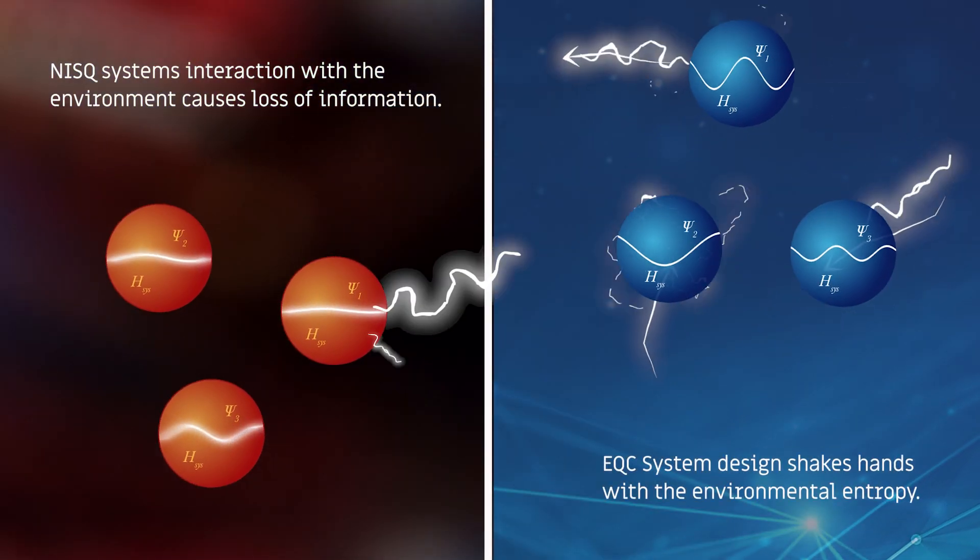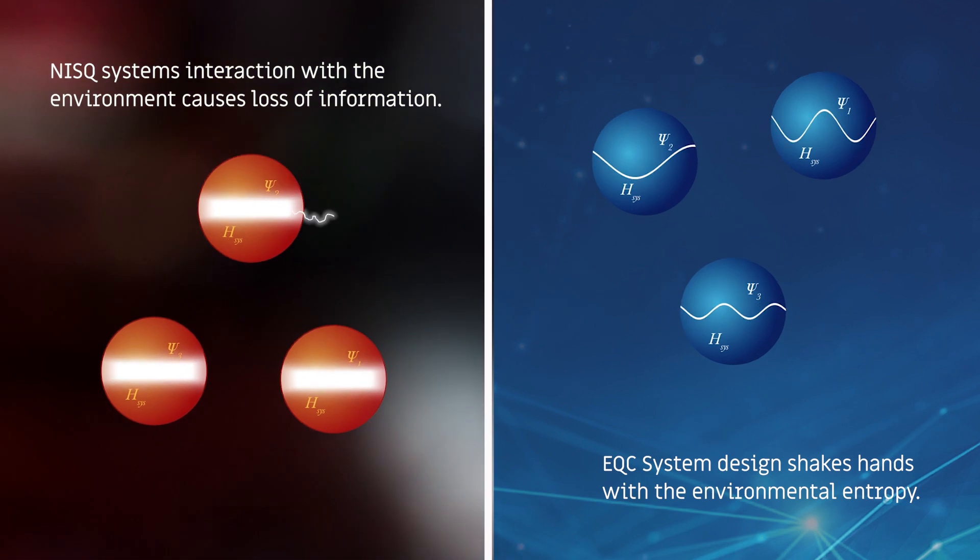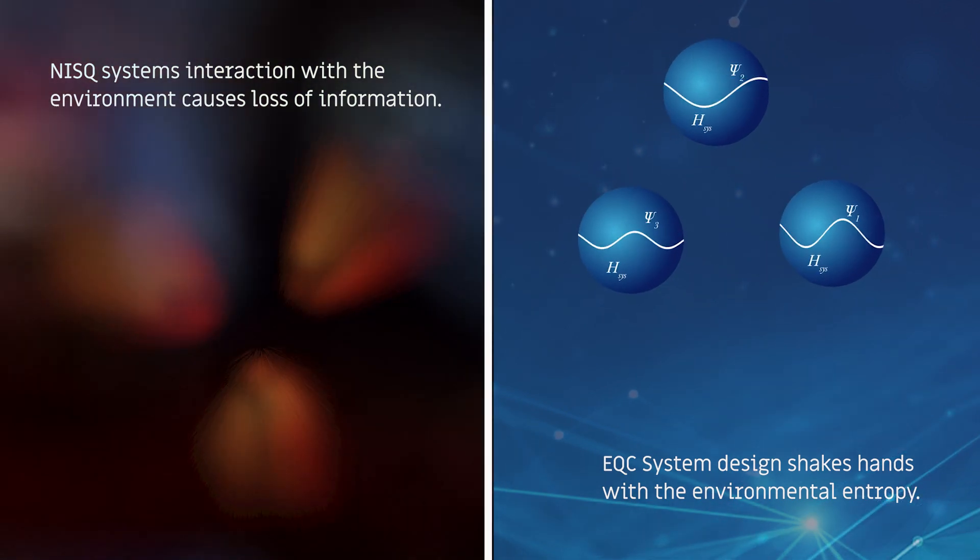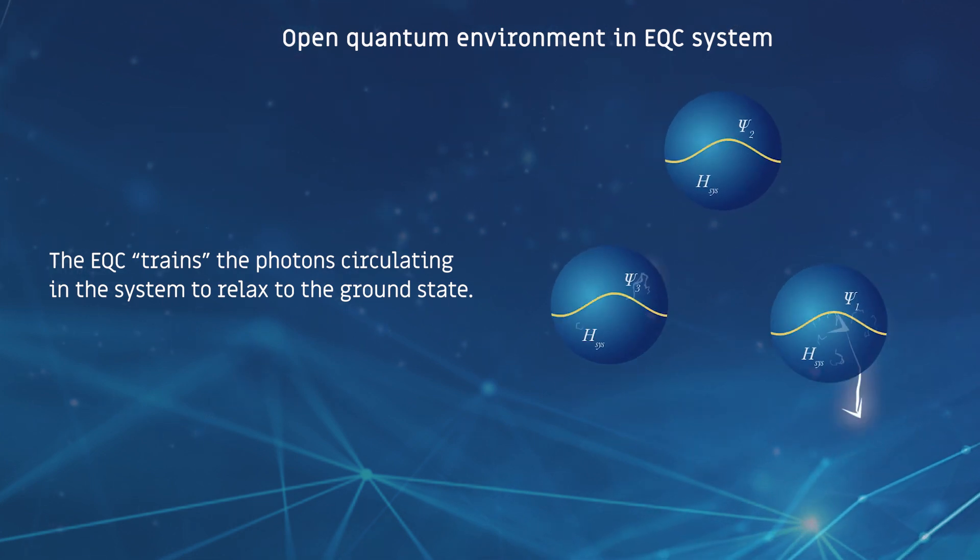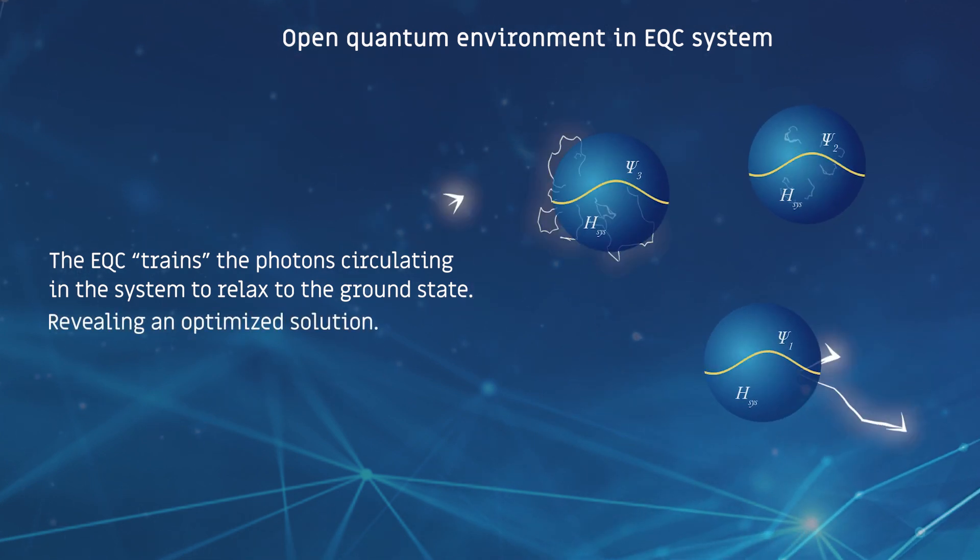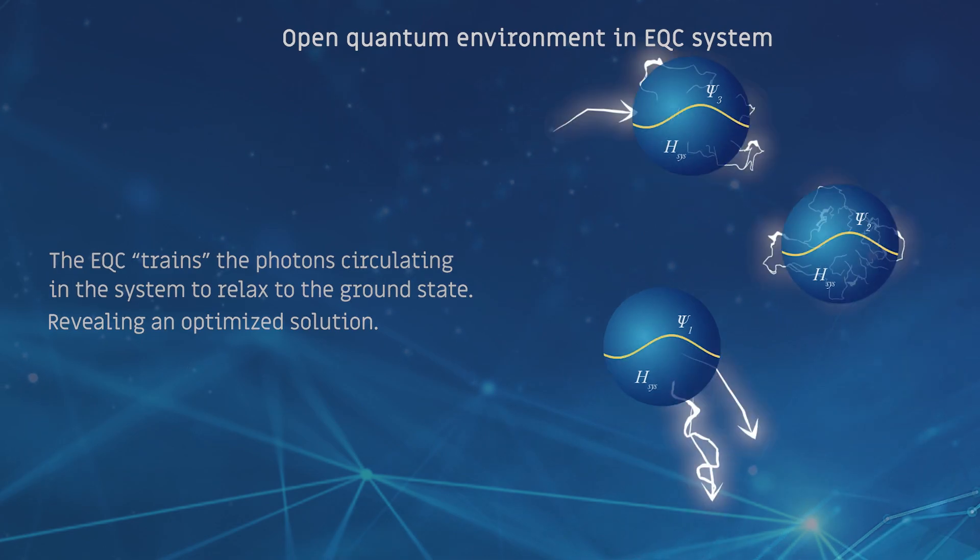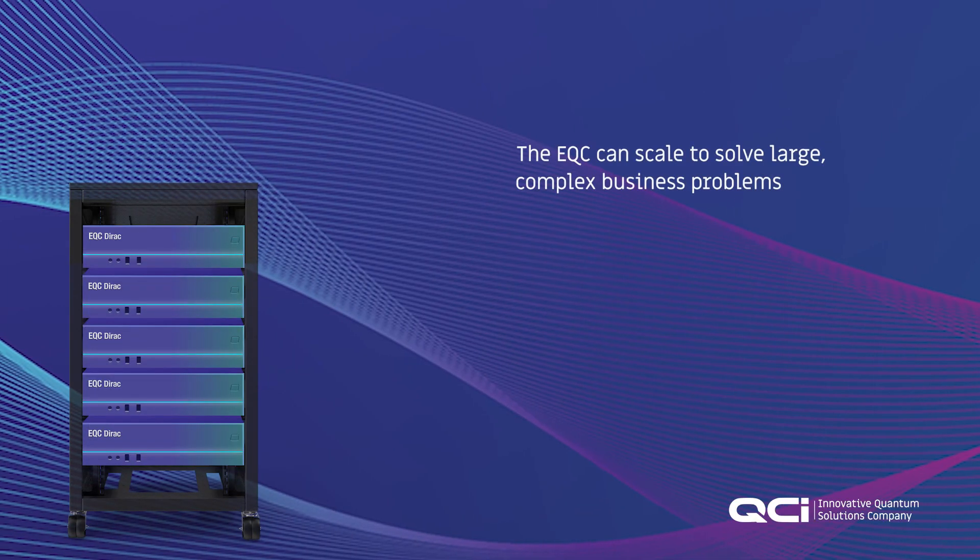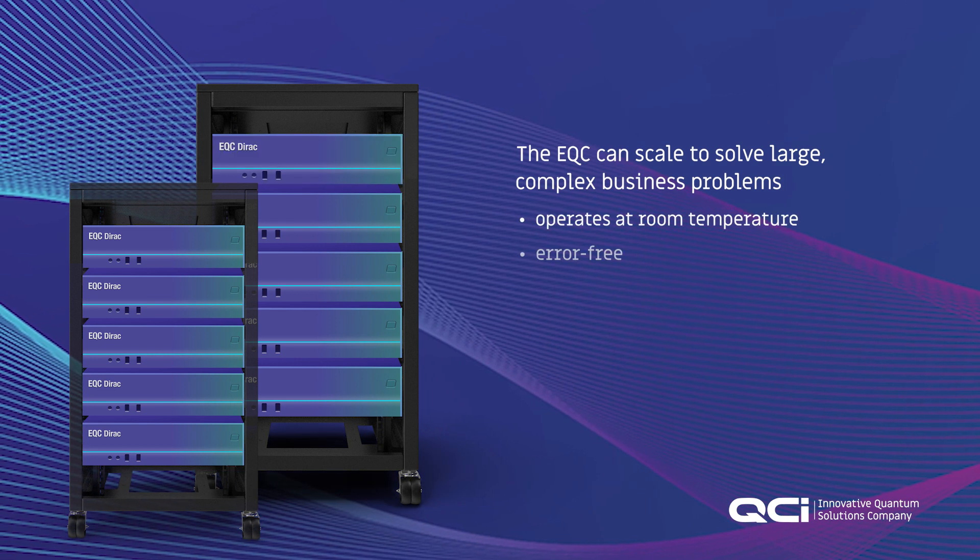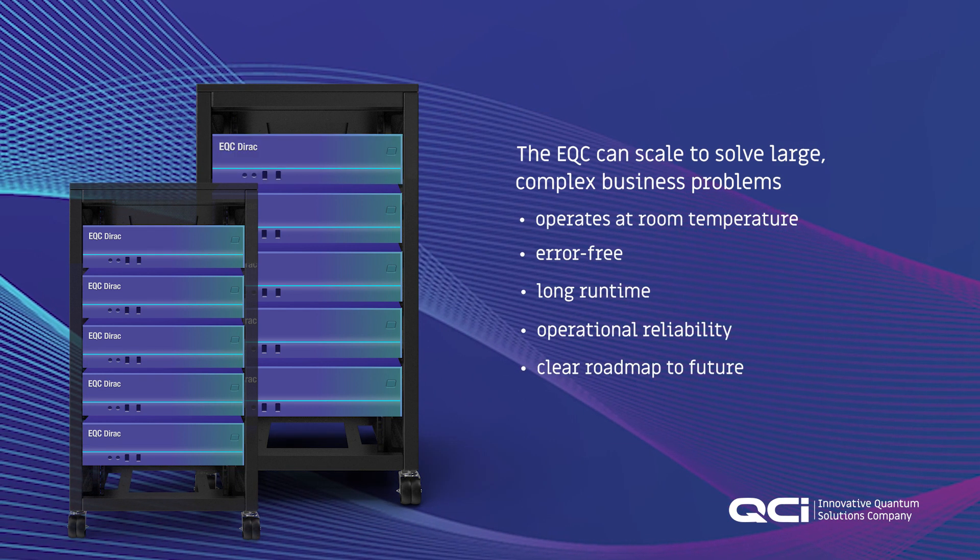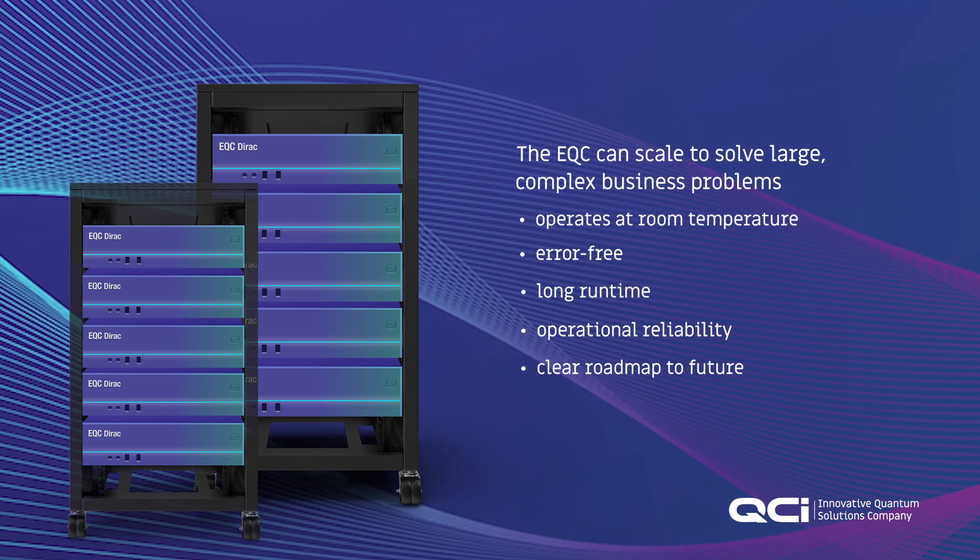Instead of trying to isolate qubits from environmental entropy, the EQC design shakes hands with it to train the photons circulating in the system to relax to this ground state, revealing an optimized solution. Using this simple and elegant approach, the EQC can provide solutions to difficult, highly constrained optimization problems containing many thousands of qubits today with a clear technology roadmap for the future.